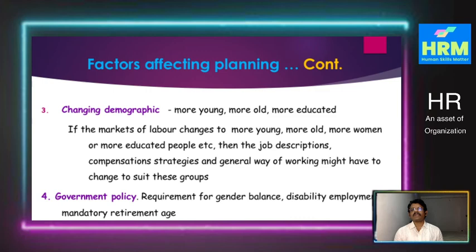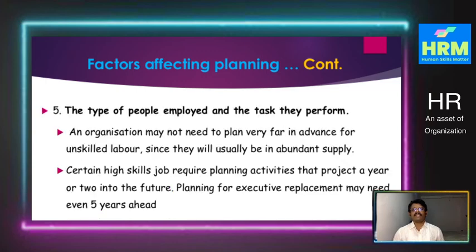The fourth factor is government policy. Recruitment for gender balance, accommodating deprived communities, backward communities, and disabled employees, mandatory retirement age, and voluntary retirement schemes are all influenced by government policy. Based on government policies, organizations develop various HR policies to implement government directives with regard to manpower.